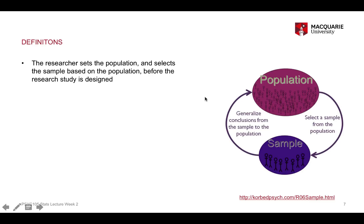The researcher themselves — the person designing, conducting, and analysing the study — designates what the population of interest is. Depending on the research question, you'll have different populations. If I'm interested in how young people learn to drive, my population might be those who are 16 years old on their L's in Australia. The population of interest is identified before you've actually designed the study and collected the data, so the first step is working out who you're interested in, and then identifying who the sample is that's representative of that population.